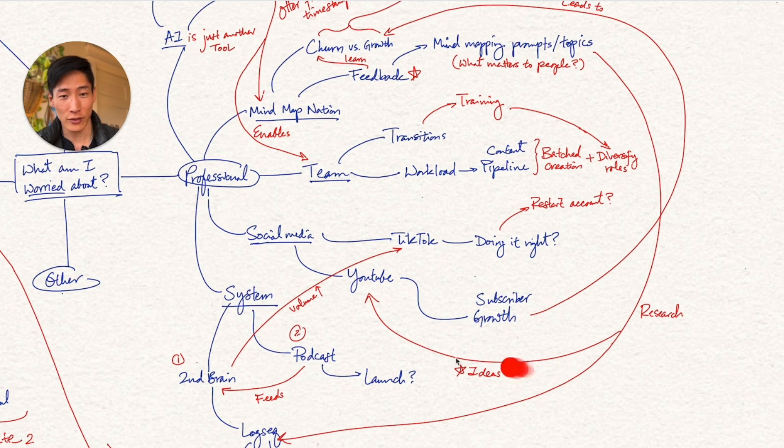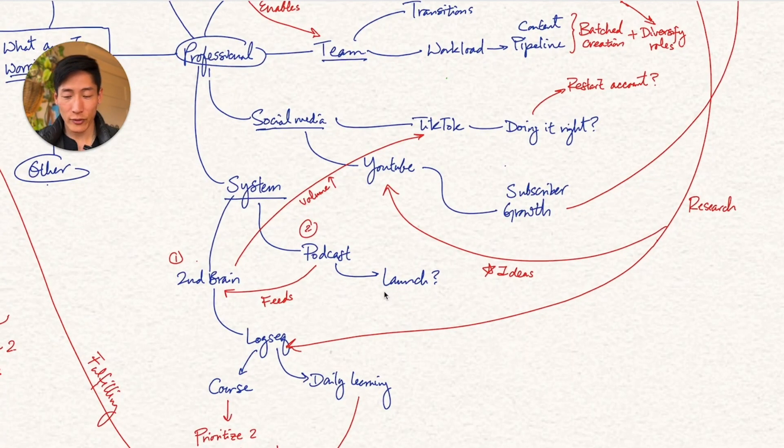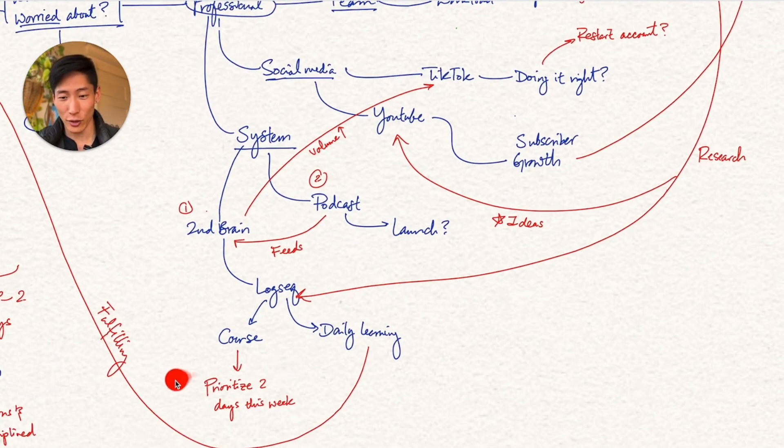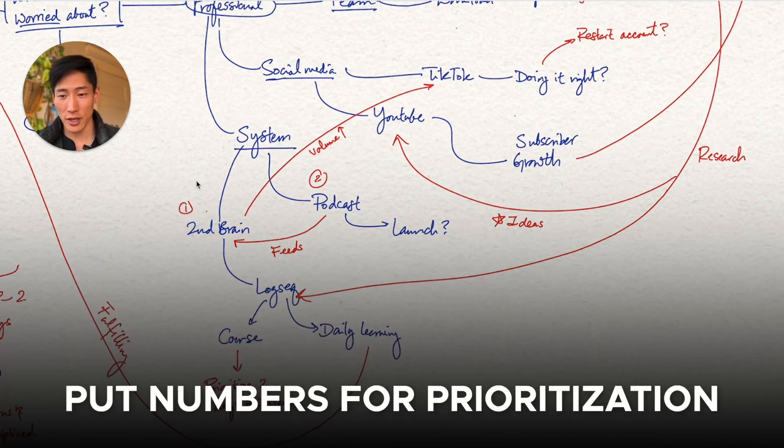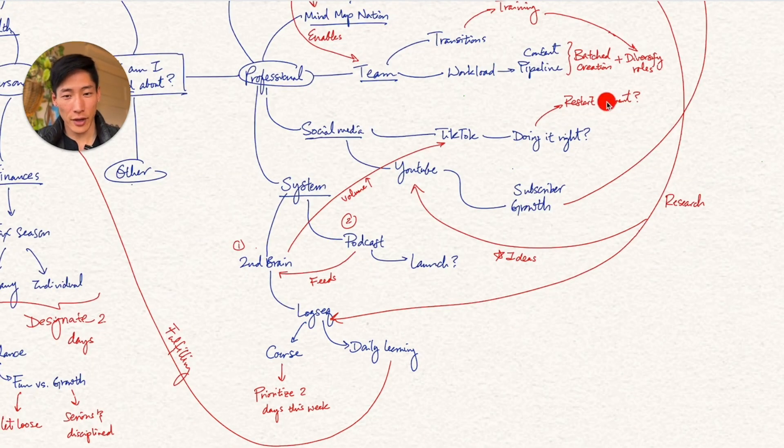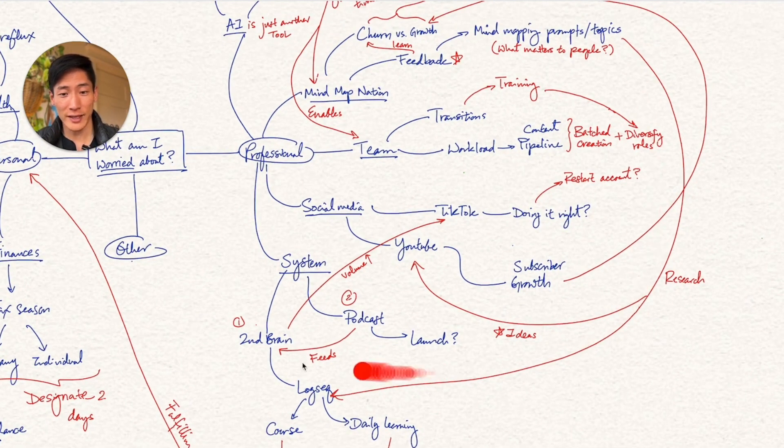As for my content creation system, there's the second brain component, the personal knowledge management. That's really just learning how to use these tools again. So prioritize two days this week in order to actually sit down, go through the course and start using it. And once I have this, I put numbers, and I put a number here, one and two, because there's a priority. I first have to build the platform to store all my learnings in order to make my podcast more productive because then it feeds into my second brain, which then will feed into more content. So all these different arrows on the professional side is actually a bit of a flow. This is what I call a feedback loop because one thing actually feeds into another that then fuels some of the other components of the system.